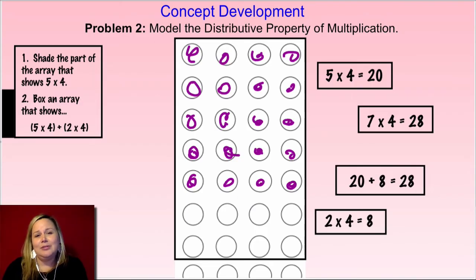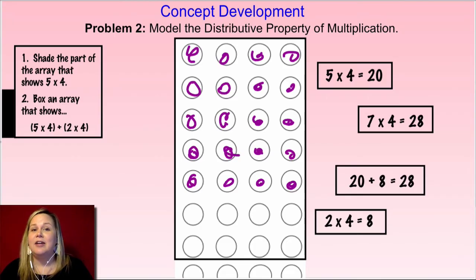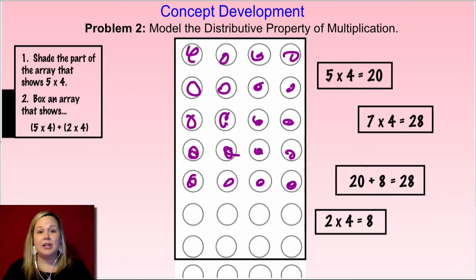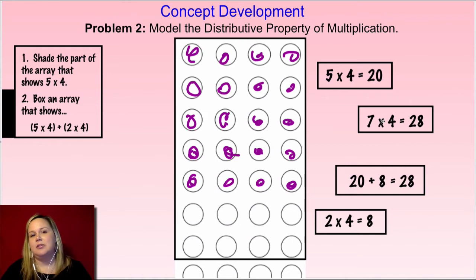My question for you is: why do you think I asked you in both problems to use five times four? One reason is because it's a smaller number than seven or eight or six. But the main reason is because you can count by fives to solve it — using the commutative property, you can flip those factors. So you could count five, ten, fifteen, twenty and have that problem solved much faster than counting by fours seven times. Anytime you can use the distributive property to break apart factors into something with a five, it's going to be easier because you can skip count by fives.